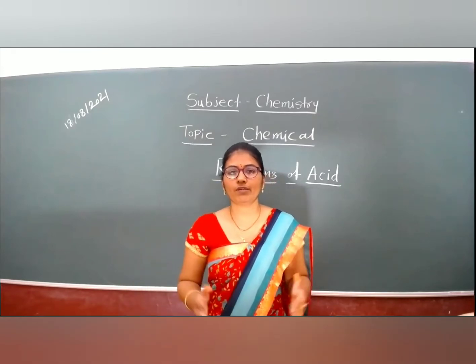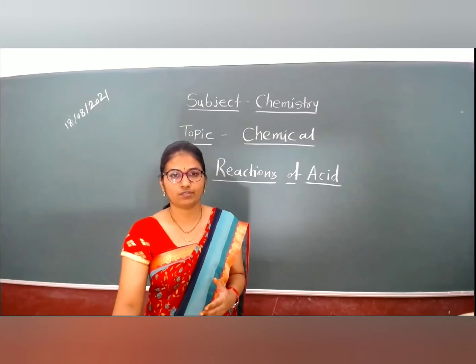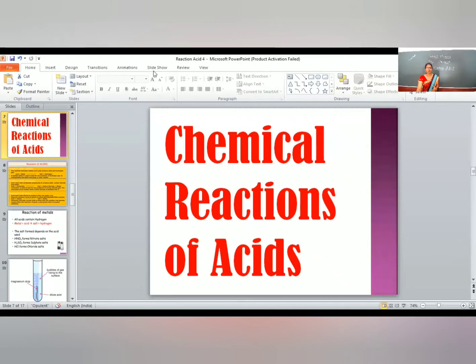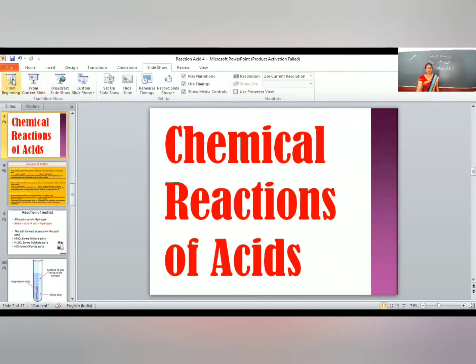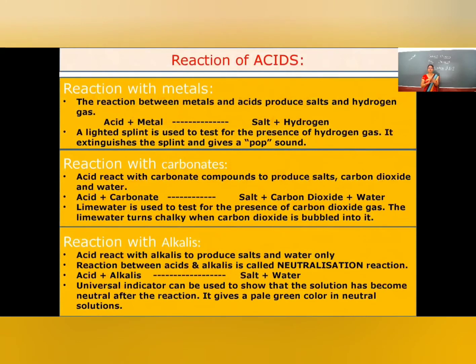Now we will start chemical properties and chemical reactions of acids. Acids react with different things like metals, carbonates, alkalines, and non-metal oxides to form different products.